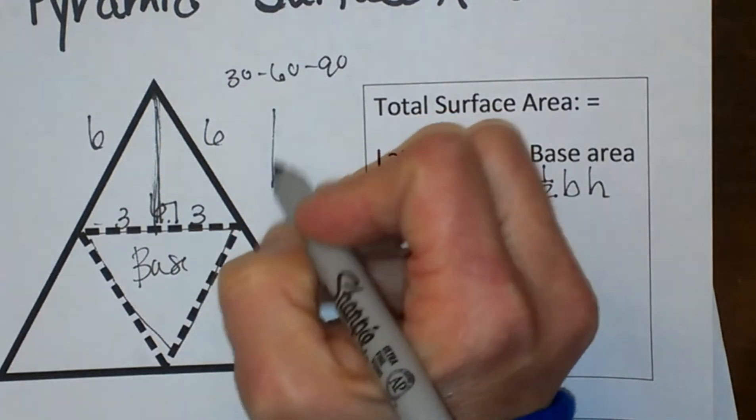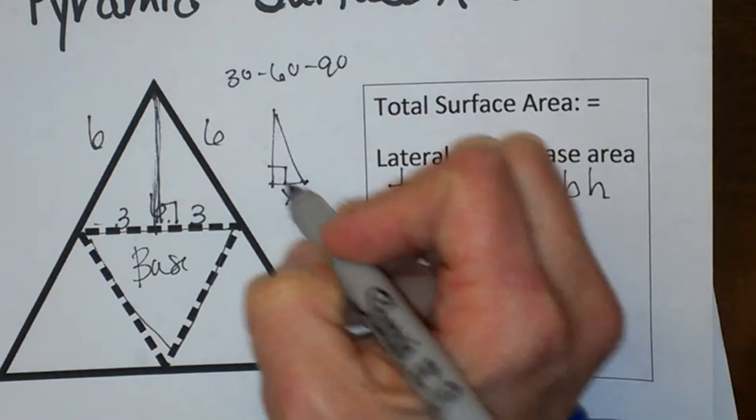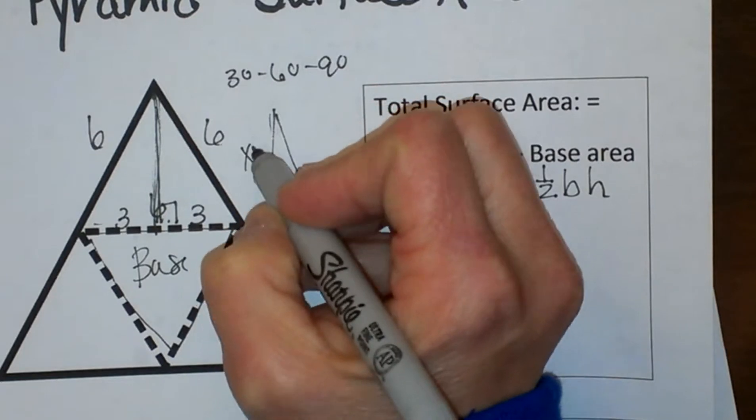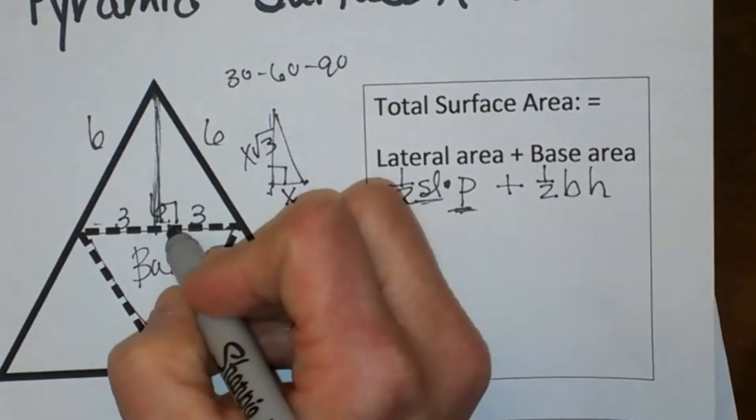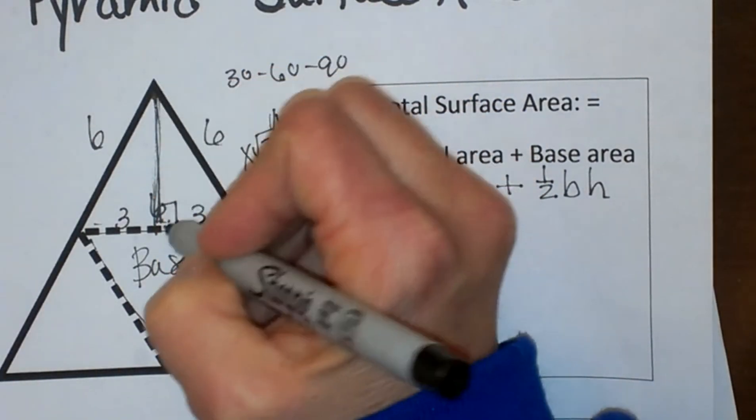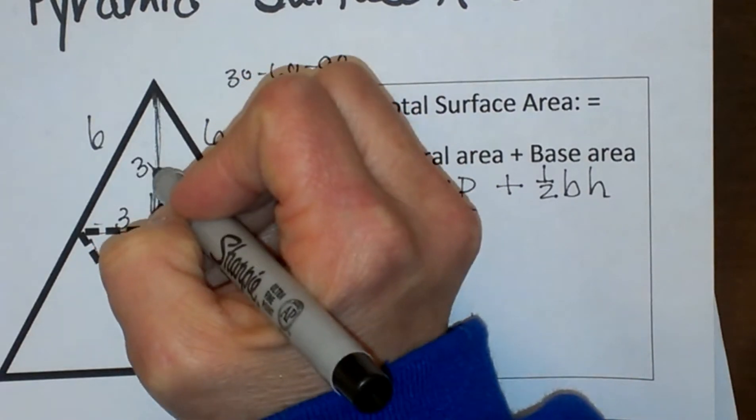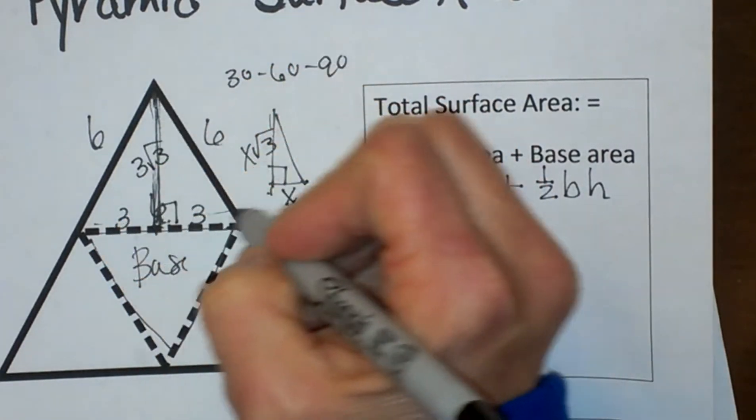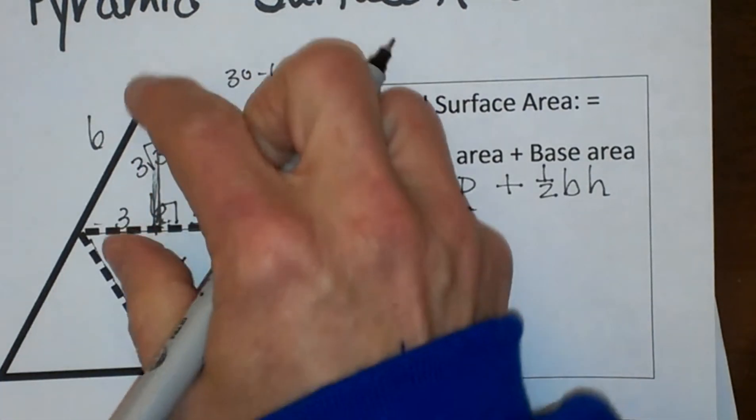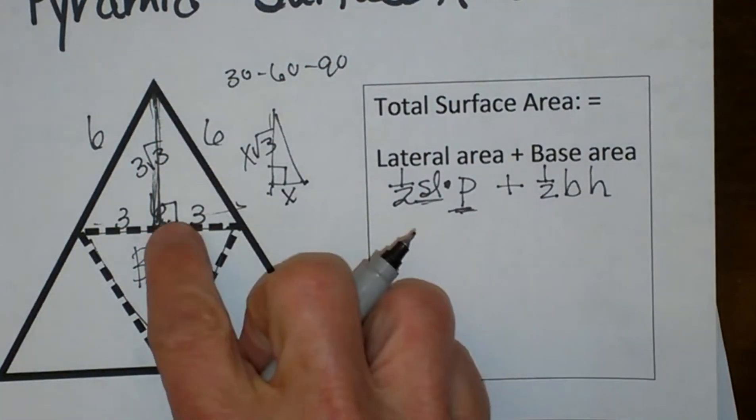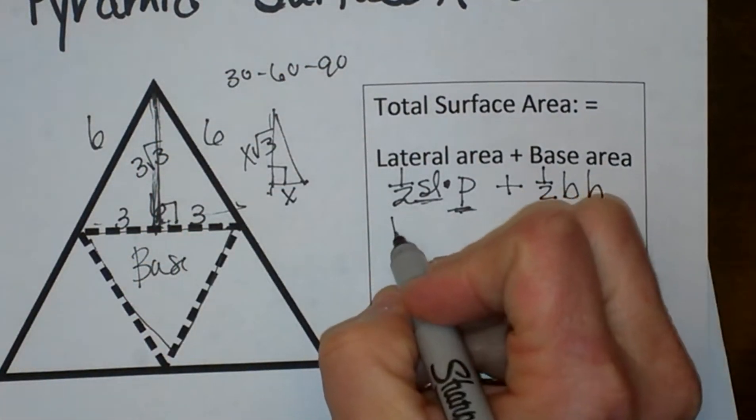My 30-60-90 rules say that if I know my short leg is x, then this long leg is x root 3. If you don't know the 30-60-90 rules you can use the Pythagorean theorem to find that height. I now have my slant height, so let's plug that in.